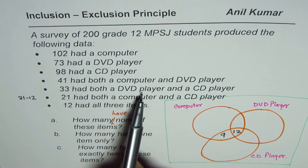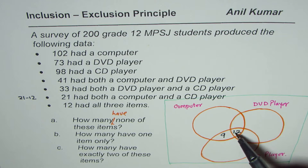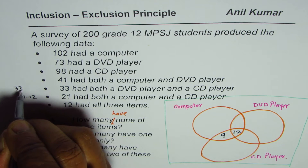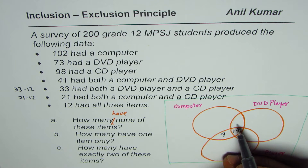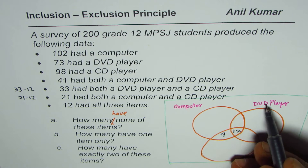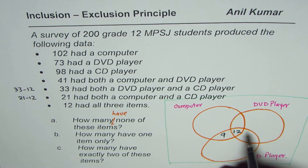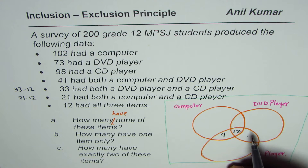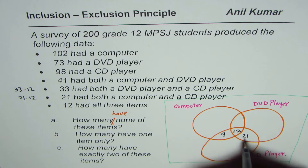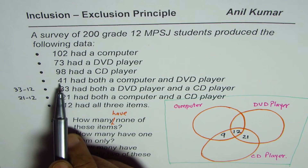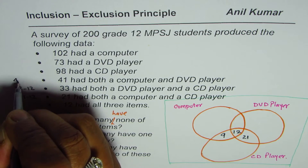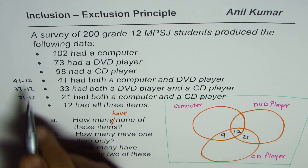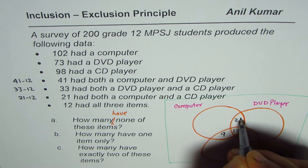33 had both a DVD player and a CD player, so that intersection totals 33. We do 33 minus 12, which gives 21, so we place 21 in the DVD and CD only region. Similarly, 41 had both a computer and DVD player. So we do 41 minus 12, which gives 29, and we place 29 in the computer and DVD only region.